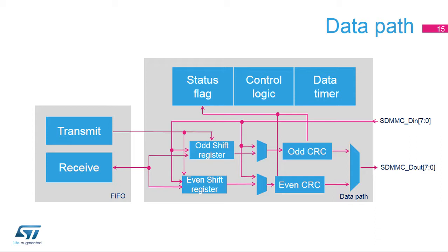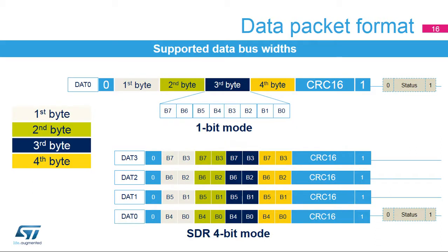In single data rate (SDR) mode, depending on the configured data bus width, the data path sends data blocks over 1 pin (SDMMC-D0), 4 pins (SDMMC-D0 to SDMMC-D3), or 8 pins (SDMMC-D0 to SDMMC-D7). First, a start bit is generated on the bus, followed by the data packet with the first-to-last bytes of the sequence (the fourth byte in our example). Then the CRC-16 and end bit are appended to the data packet on the bus line.